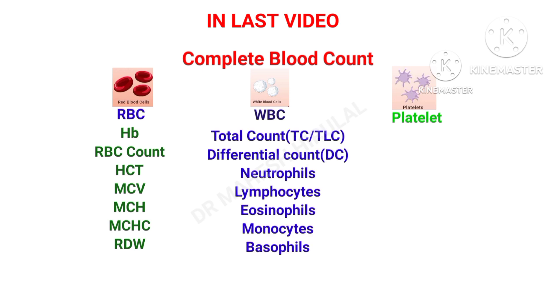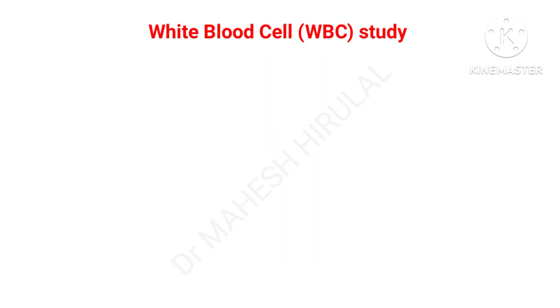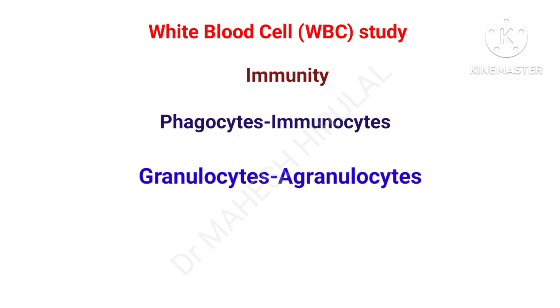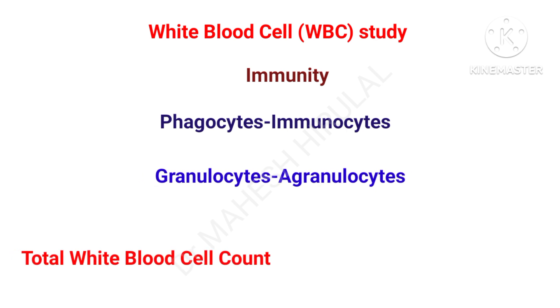In this video we will discuss WBC and platelet studies. WBCs are the major cells involved in immunity. They are divided into phagocytes and immunocytes, or morphologically into granulocytes and agranulocytes. Total white blood cell count and differential counts are used to diagnose and prognose different diseases.